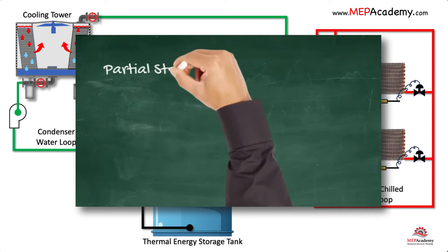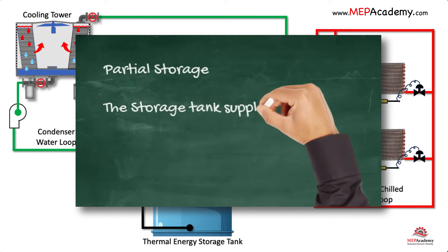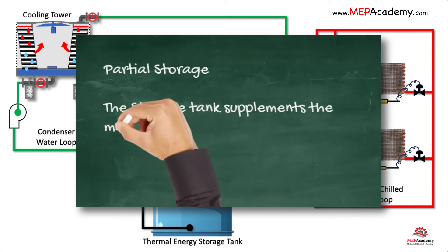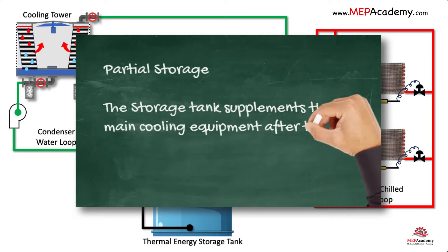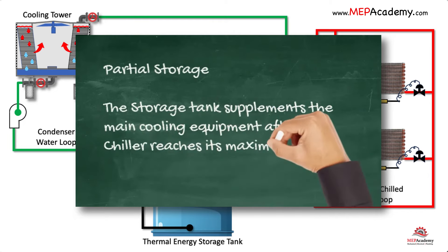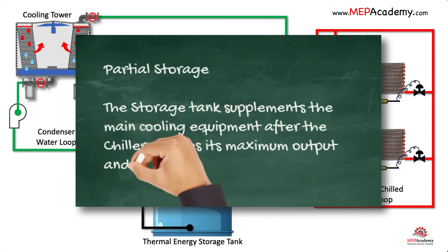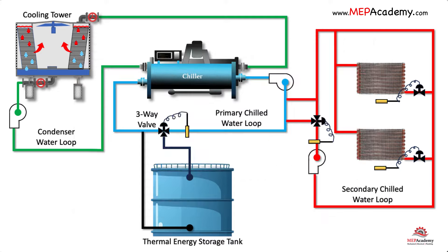Partial storage systems use the stored chilled water to supplement the main chiller equipment when they have reached their full capacity and additional cooling is required.